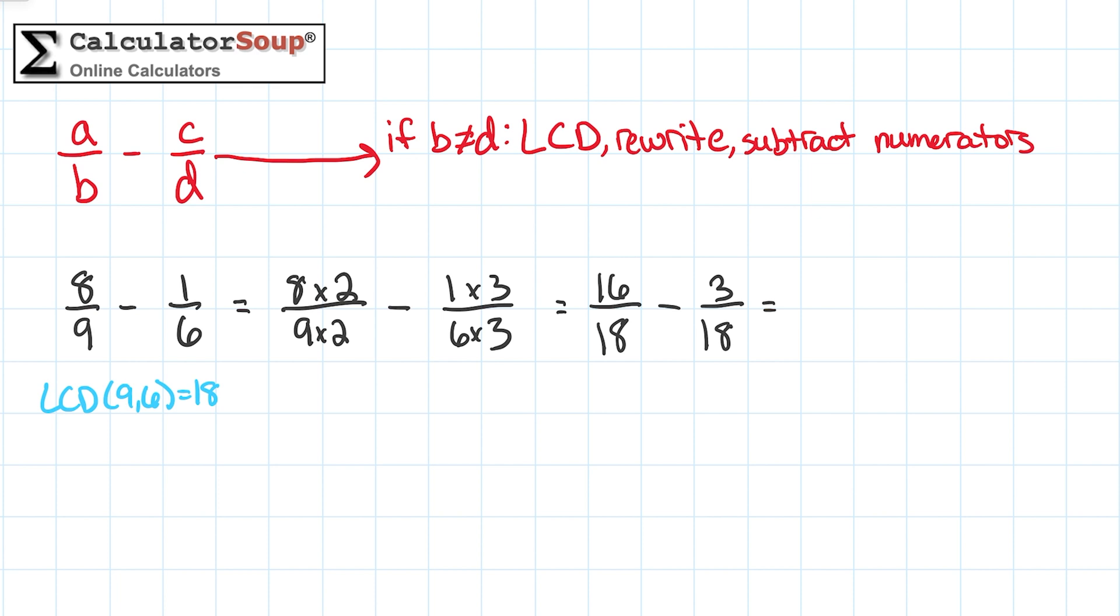Now that the denominators are the same, let's subtract the numerators to get 13, and place that result over the common denominator 18. This fraction cannot be reduced, so our final answer is 13 eighteenths.